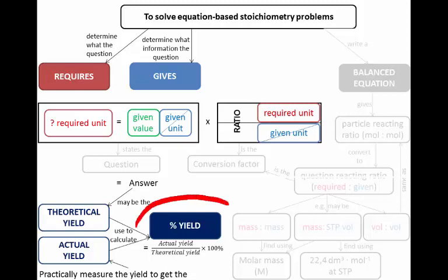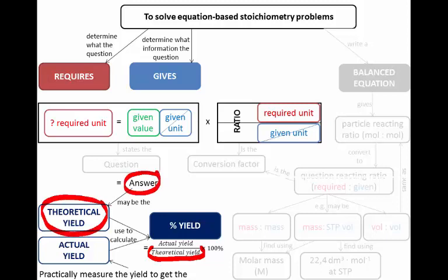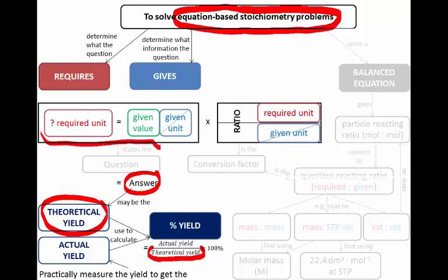Remember that percentage yield is actual yield divided by theoretical yield. Actual yield will be given in the question; you'll probably have to find theoretical yield. Theoretical yield is the answer to the equation-based stoichiometry problem using the general method that we've been using.